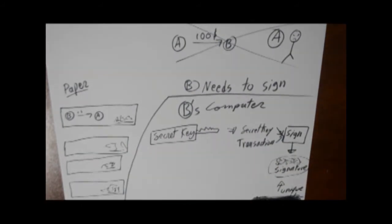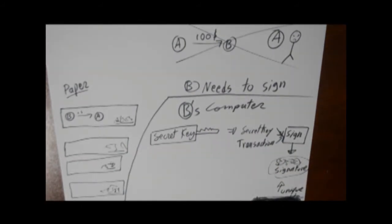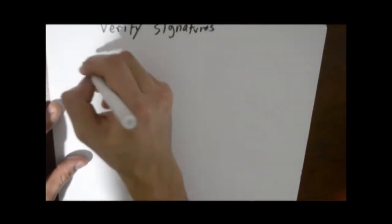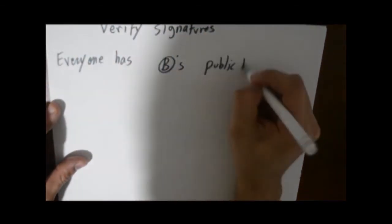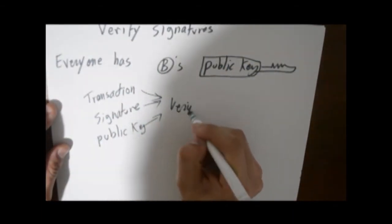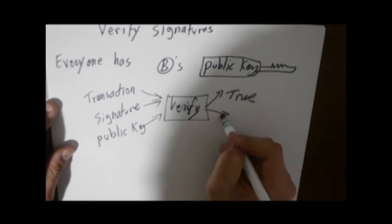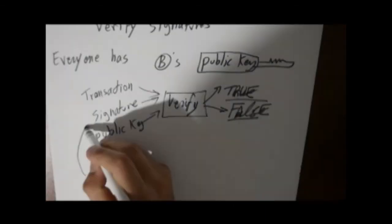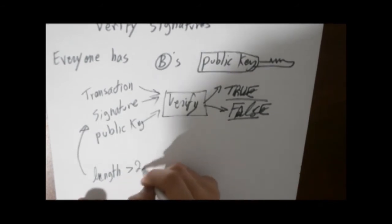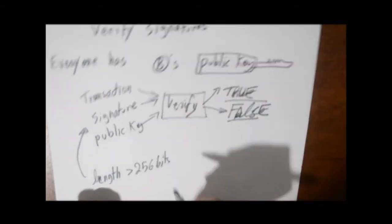No one can copy it. But that would also mean that no one can be sure that the signature is correct. This is why everyone has your public key, so they can use it to verify the digital signature that came from you. Since your signature is at least 256 bits long, no one will just guess your signature.